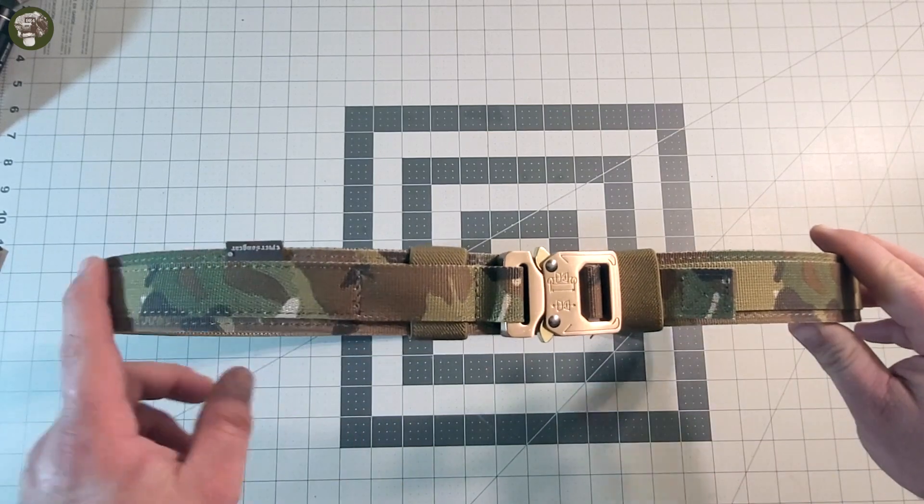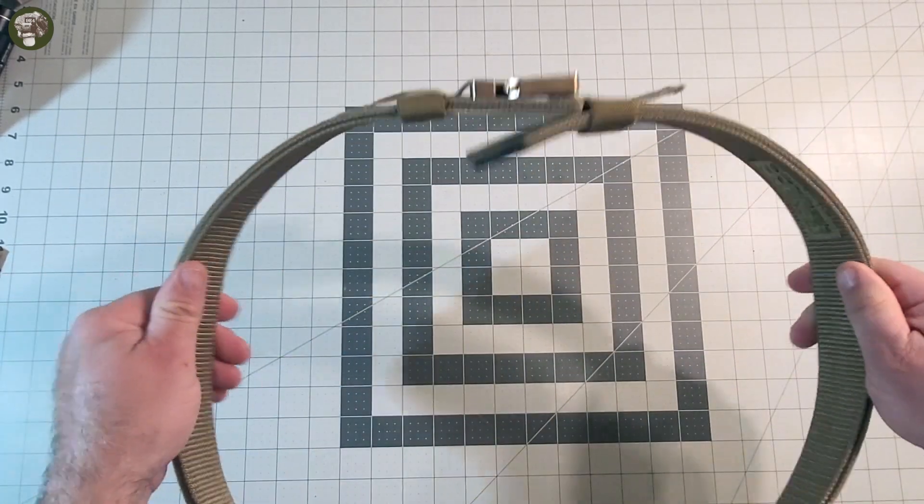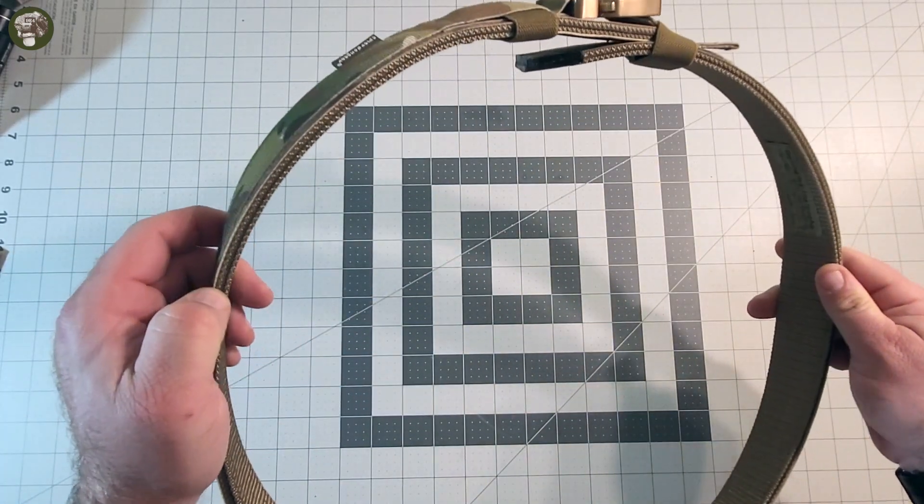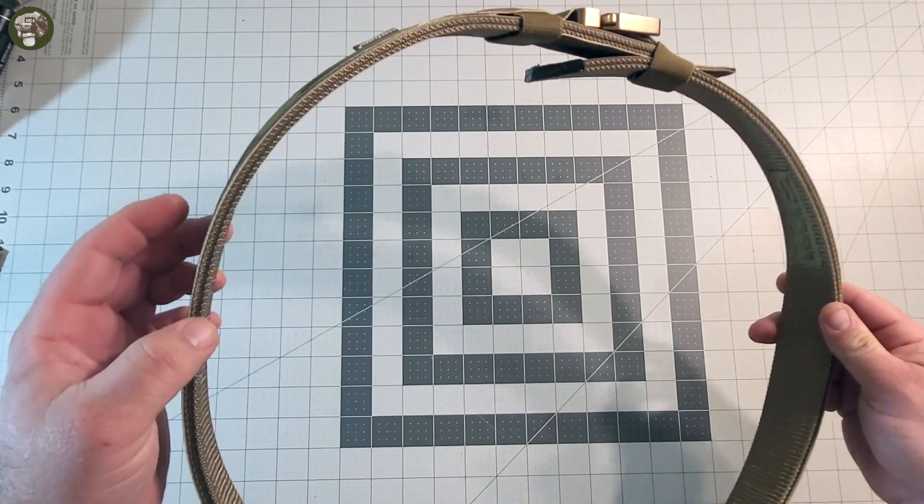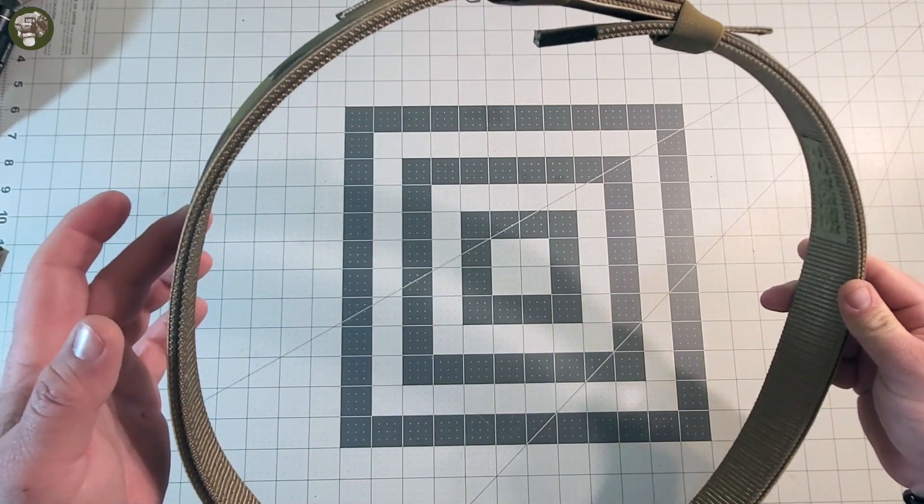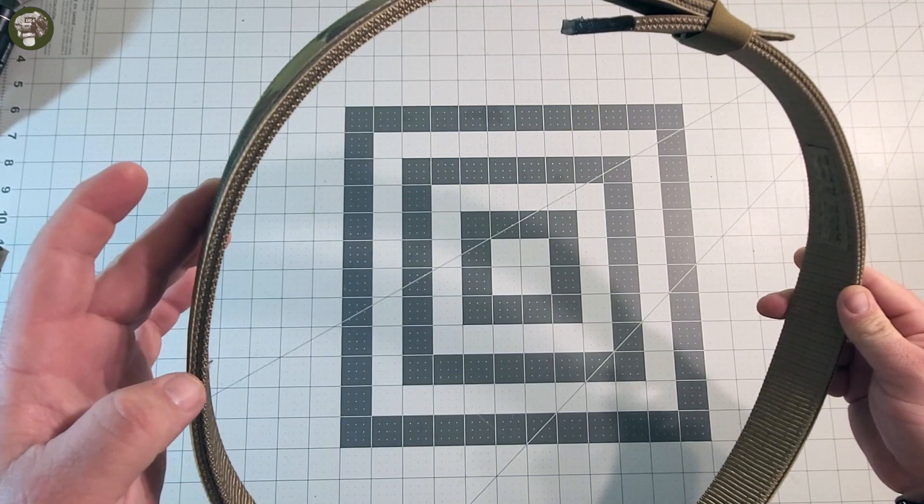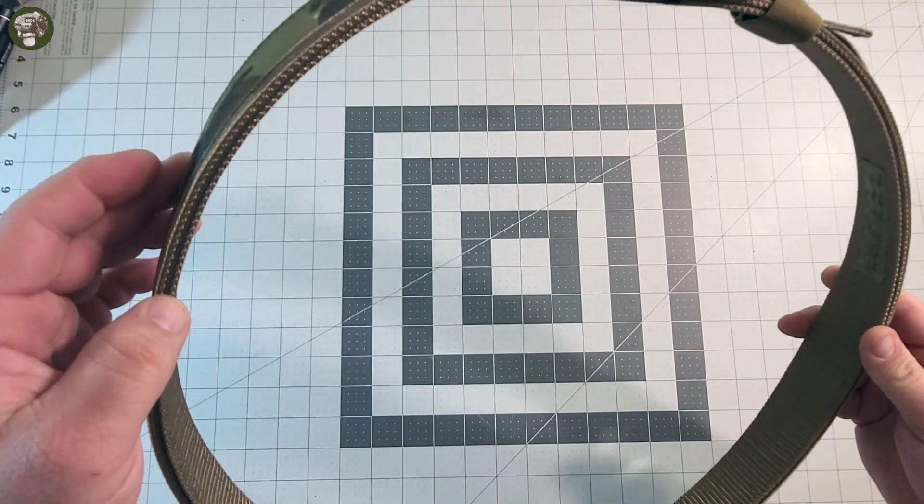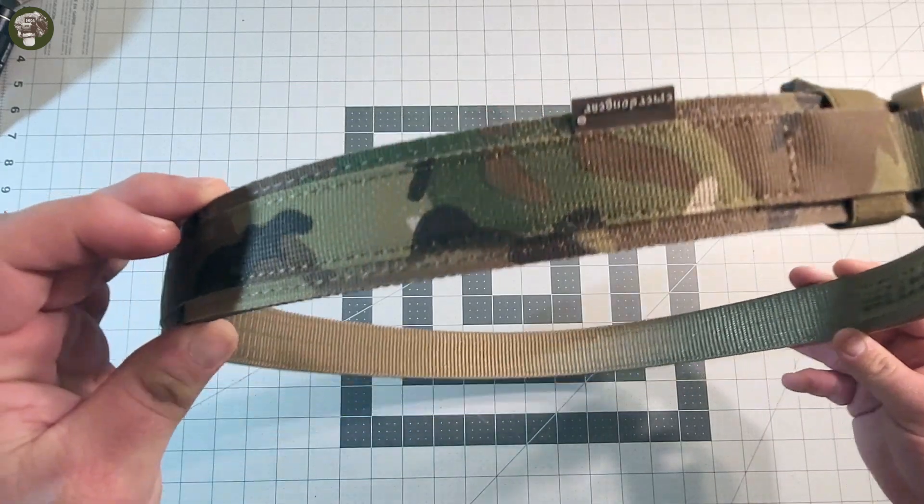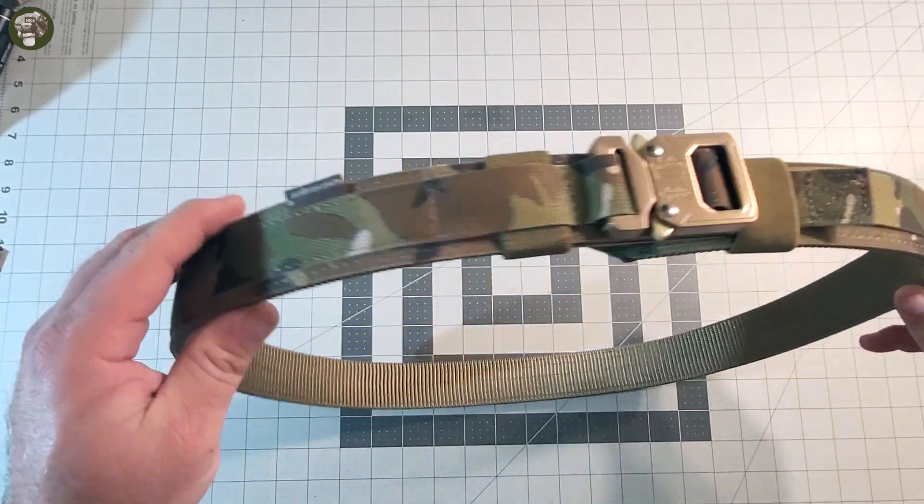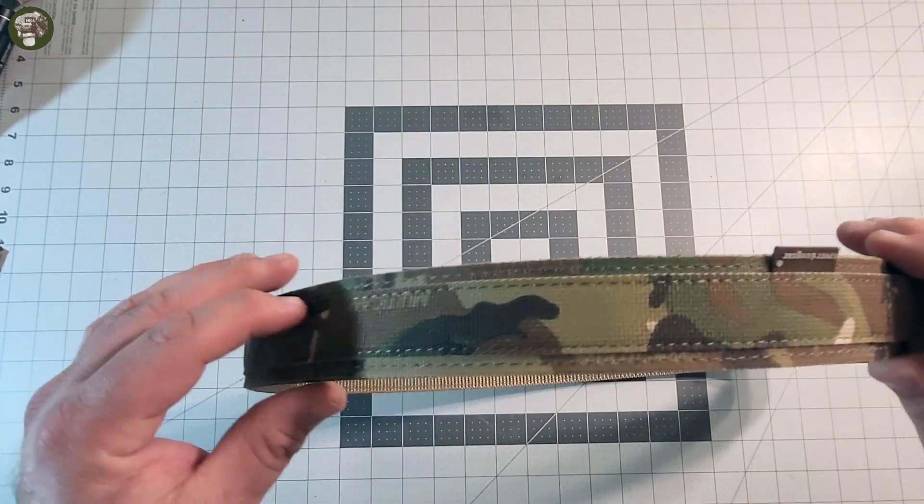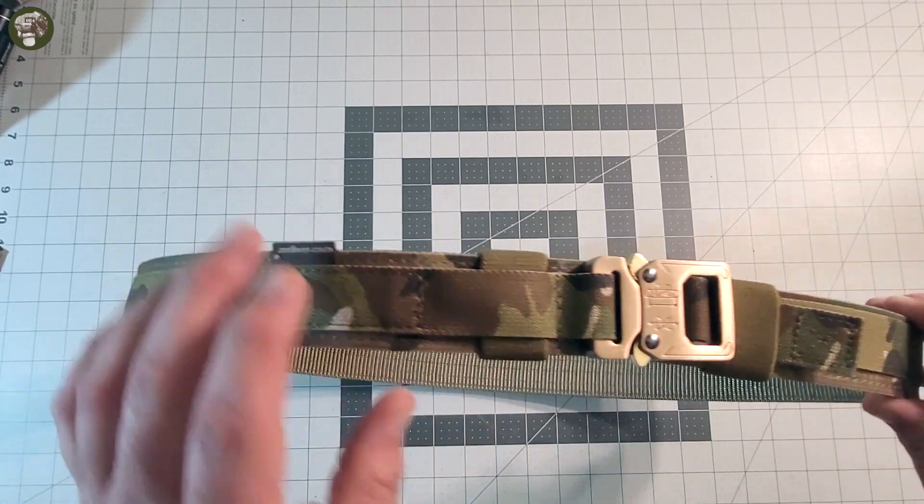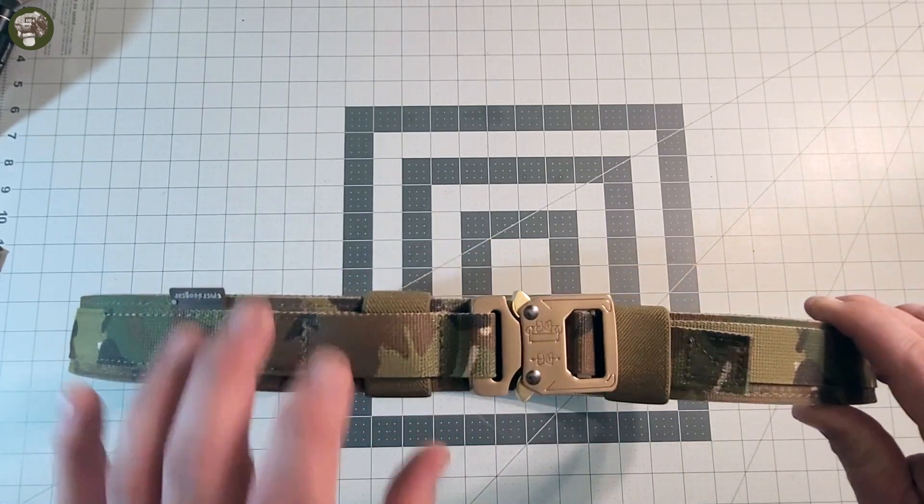Belt is multi-cam, pretty heavy duty webbing. What they've done is they've really just taken two strips of webbing and sandwiched them together with some high density plastic reinforcement in the center, and then covered it with multi-cam and then one inch multi-cam webbing all the way around in order to connect it to this buckle.